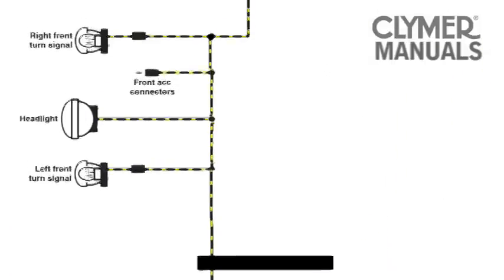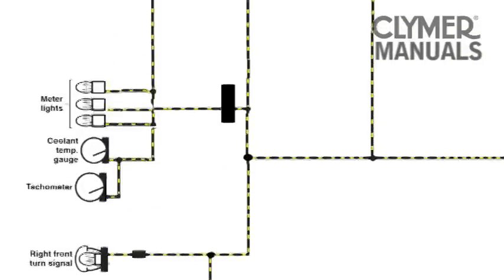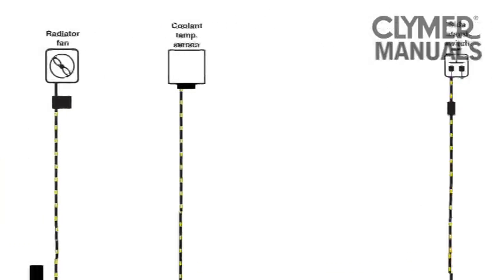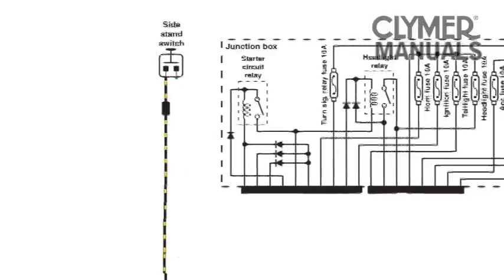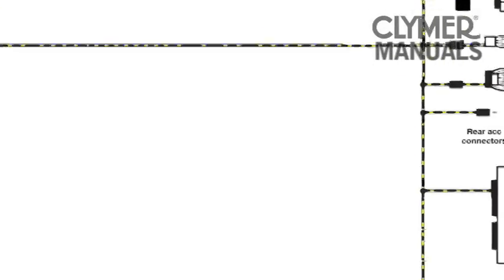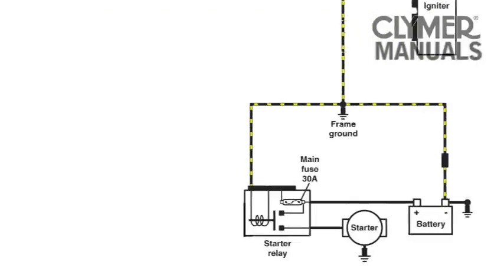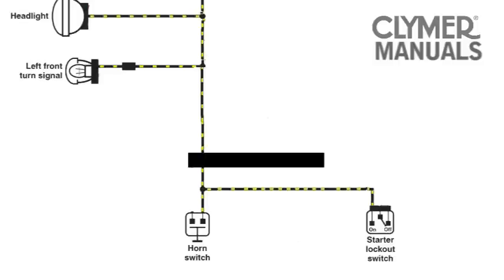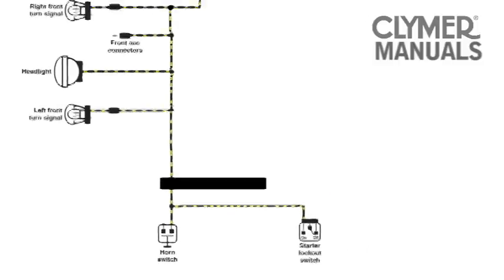So we can make a quick test of the main frame ground by simply testing the function of some other components. For example, does the horn work? Is the headlight bulb the only bulb out? They all share this same ground circuit. If they work, then chances are the ground is good.